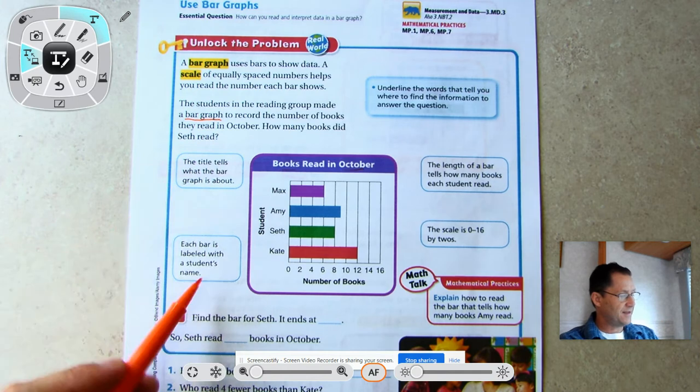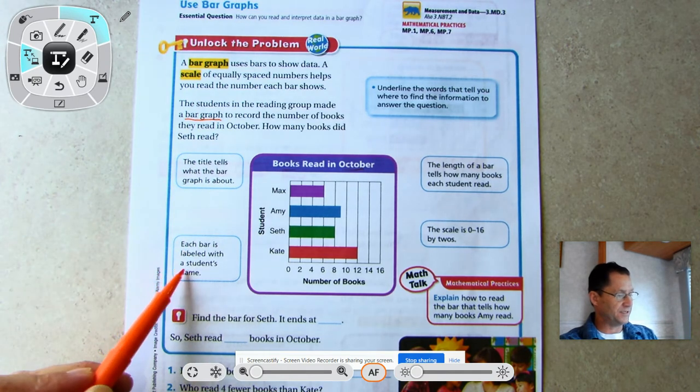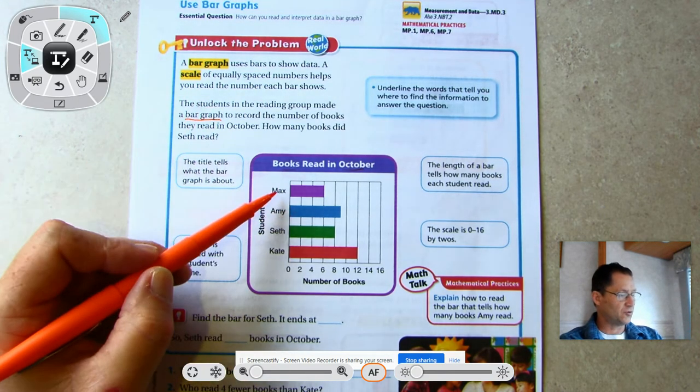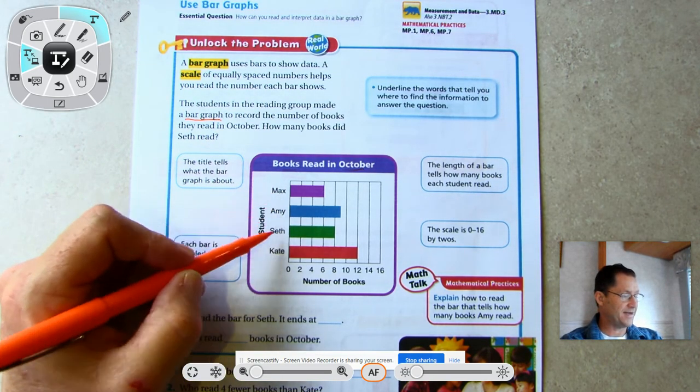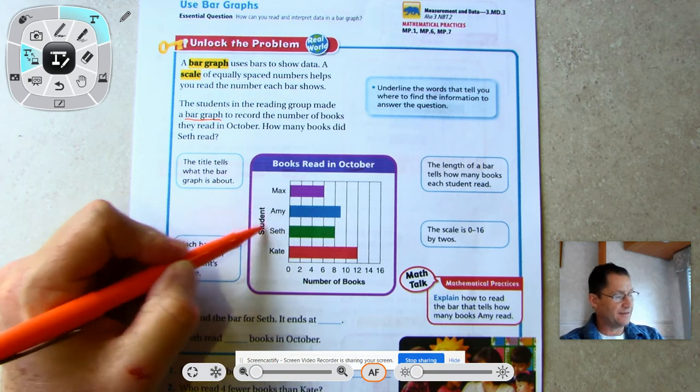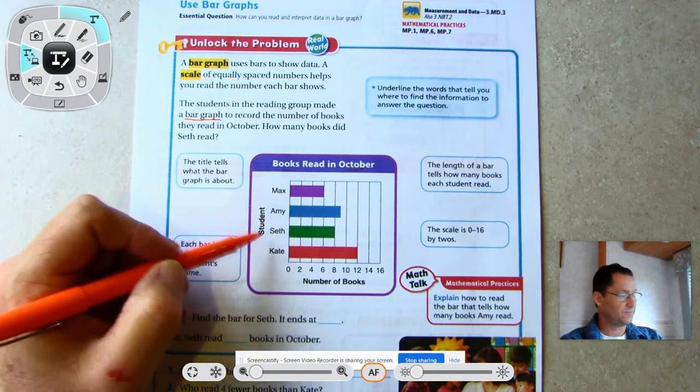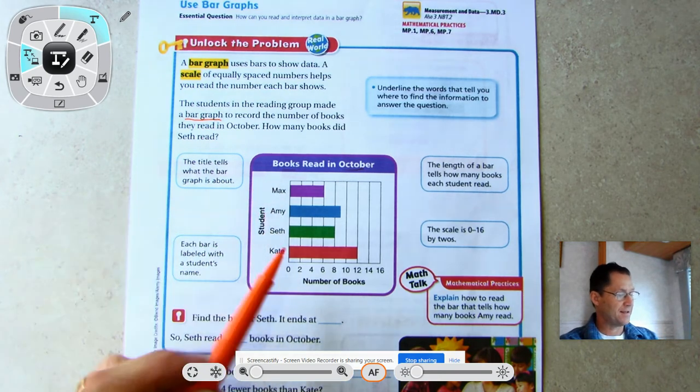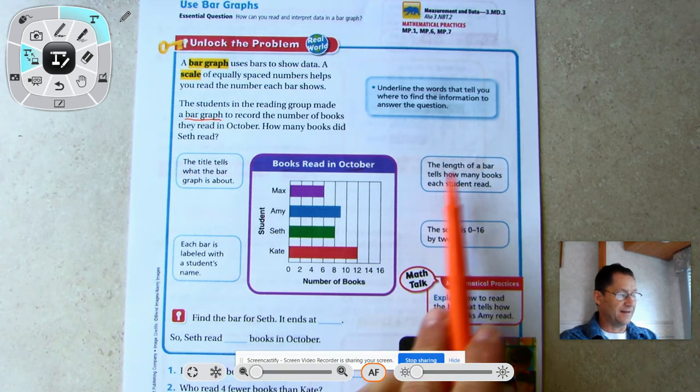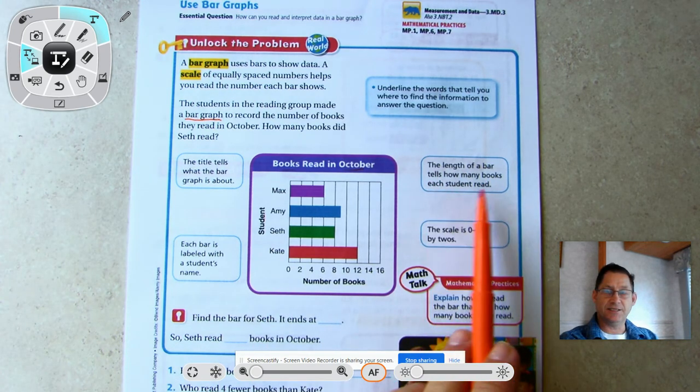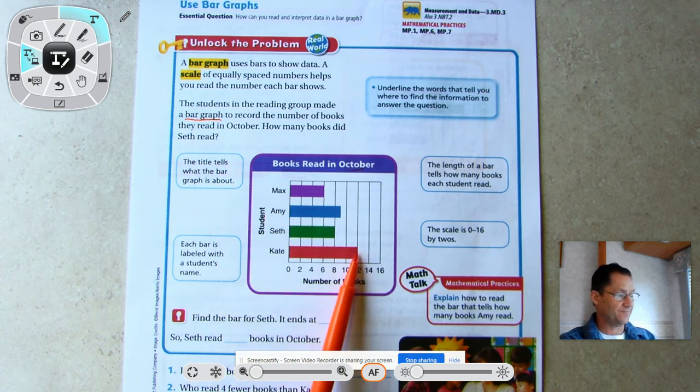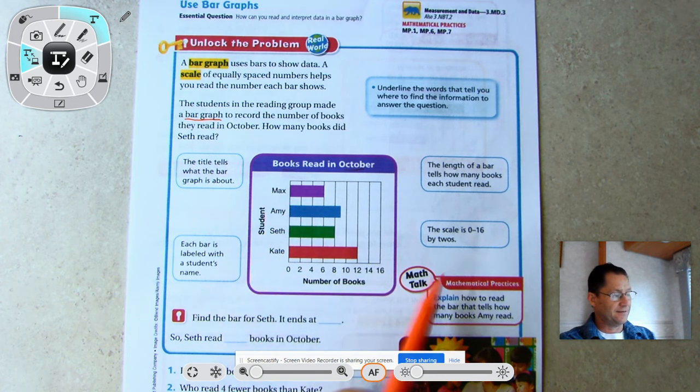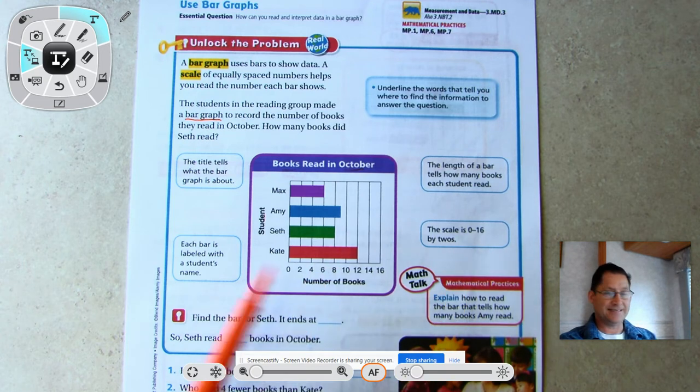Each bar is labeled with a student's name. We have to have a label for each of the parts being counted, and we have a label that says what those things are. The length of a bar tells how many books each student read.